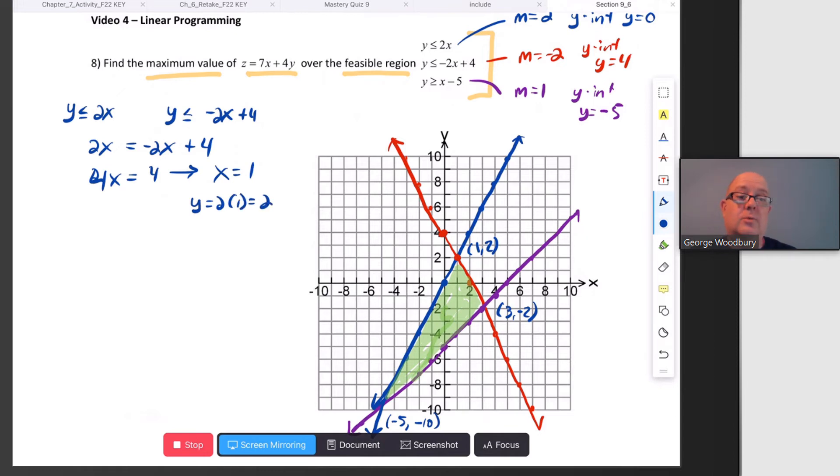Or we could have plugged into the other one: -2(1) + 4 = 2. So (1, 2) is one of those points where they cross. Now, let's look at where the red line crosses the purple line, the second and third equations. That's where -2x + 4 = x - 5. If we add 2x to the right and add 5 to the left, we get 9 = 3x, or x = 3. When we plug it in, y = 3 - 5 = -2. Or -2(3) + 4 = -6 + 4 = -2.